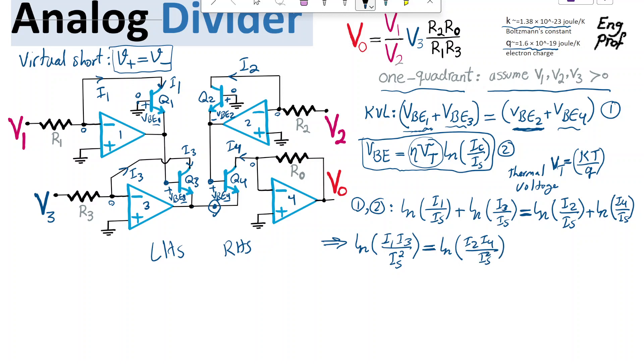from this equality, we can just, knowing that the polarity of these currents are all positive, we can just say I1, I3 is equal to I2, I4.